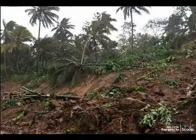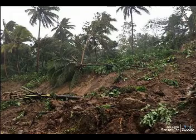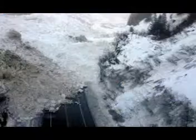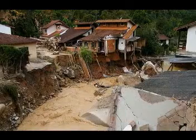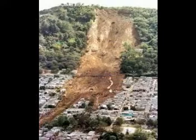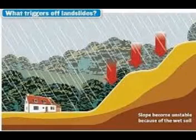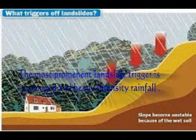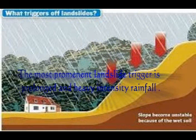What causes or triggers a landslide? Landslides may be caused due to several reasons: extensive rainfall, melting of snow, rivers, change in water level, seismic shaking, and liquefaction. Extensive rainfall is the most prominent landslide trigger — prolonged and heavy intensity rainfall. The trigger may also occur even if the rainfall intensity is moderate, but the rain duration and pore pressure are high.